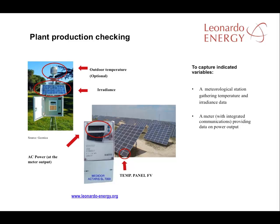If production is outside that optimum range, you can adjust the inverters or perhaps check the different rows of panels to improve performance. A communication port on the meter will enable continuous monitoring of power production.